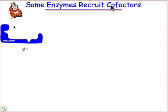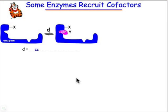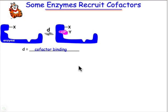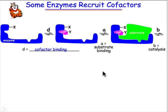Sometimes enzymes recruit cofactors. If you had your cornflakes this morning, you achieved basically an intake of vitamins that will turn out to be an essential component of some enzyme chemistry. The way that cofactors work is that they bind to the enzyme active site. Cofactors carry different chemistry than chemistry associated with the amino acids, and so it's a way to introduce new functionality not found in the 20 naturally occurring amino acid side chains. Once the cofactor is bound, the next steps are the same as usual: substrate binding, followed by catalysis, followed by turnover.